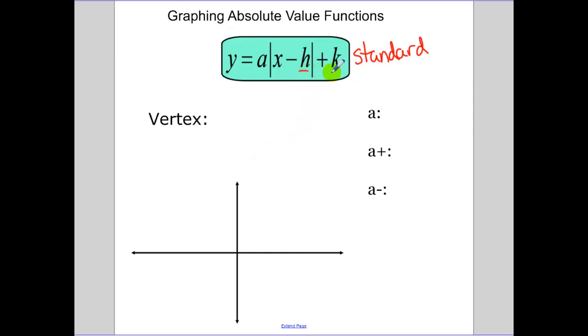The vertex, or the lowest point, is going to be (h,k). So notice, if it's x plus h, it's going to go to the left if h is negative. If it's x plus h, and it's to the right if it's x minus h. And then plus k, you go up, minus k, you go down.